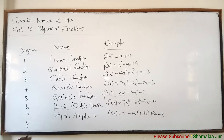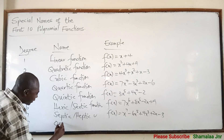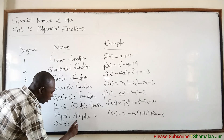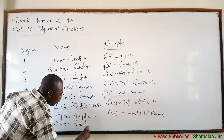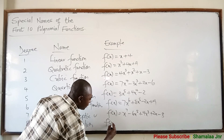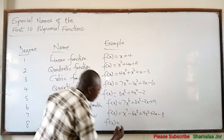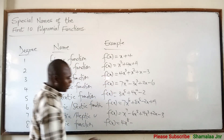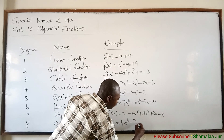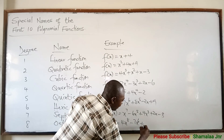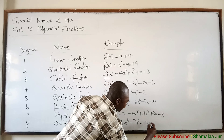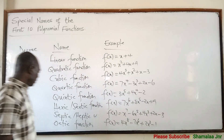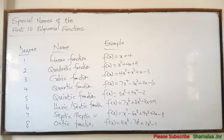When the degree is 8, then you say that it is an octic function or octic polynomial. For example, L(x) = x⁸ + 2x³ − 1. This is an octic function.